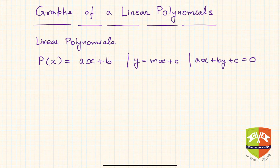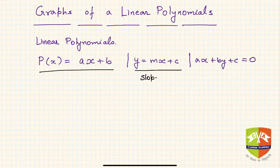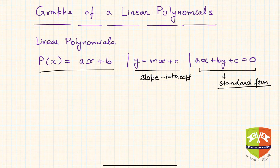What is a linear polynomial? I have shown three forms here. One is p(x) = ax + b. Another way is y = mx + c, which in coordinate geometry is called the slope-intercept form. And the standard form is ax + by + c, which is also the standard form of a linear equation.